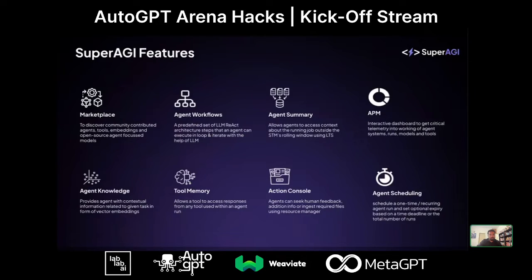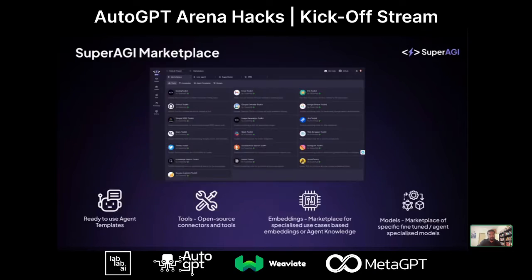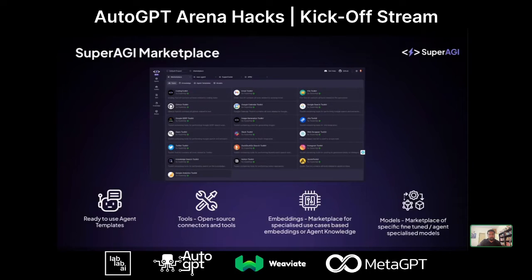Some of the powerful features we offer are agent workflows, agent summaries, and action console, which make life very easy for a developer — you focus on the use case rather than the deepest action. One of the core offerings is the Super AGI Marketplace, which has four entities: Super AGI tools; agent templates, which are one-click templates you can deploy and configure for your particular use case — they get you 80% of the way and you customize the last 20%; embedded agent knowledge, for example SEO knowledge from Neil Patel that you can plug into an agent; and models offered on the marketplace.